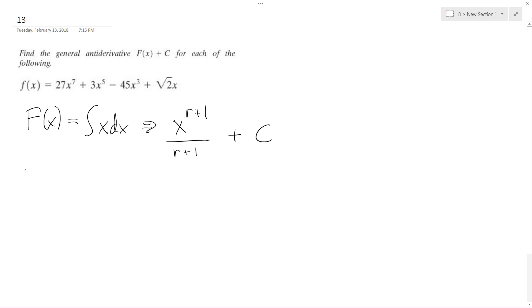So in this case, we're going to do the whole thing. So F of X is going to be equal to the integral of quantity 27X to the 7th plus 3X to the 5th minus 45X to the 3rd plus square root of 2X dx.